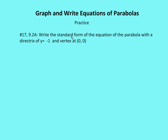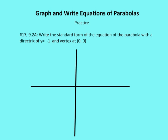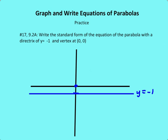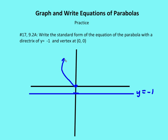Last question, number 17. The book asks us to write the standard form of the equation of the parabola with the directrix of y is equal to negative 1 and vertex at (0, 0). We draw our x-y axes, plot the vertex at the origin, and note my directrix is going to be at y is equal to negative 1 — a line that goes through (0, negative 1). I label this y is equal to negative 1. My parabola is going to open up and away from the directrix, and the axis of symmetry is perpendicular to the directrix.